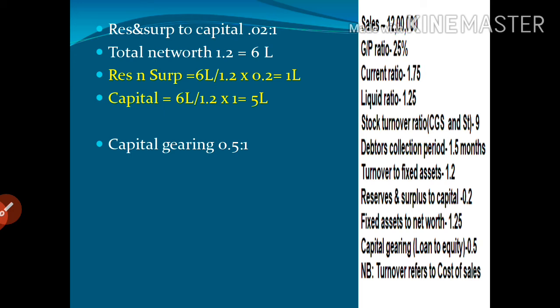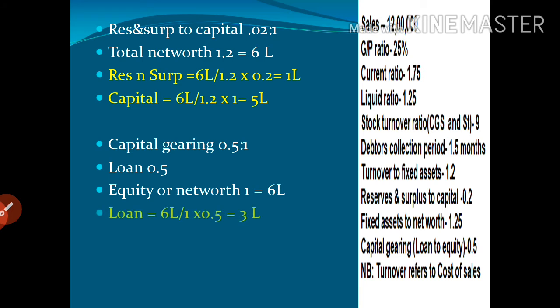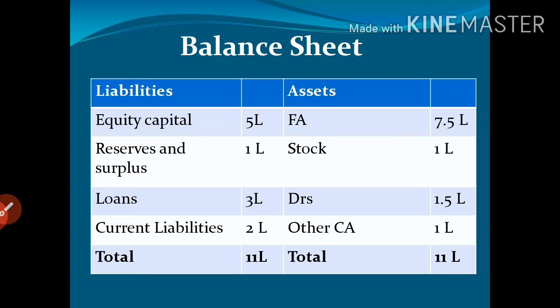Capital gearing ratio is 0.5, meaning loan to equity is 0.5 to 1. Equity here means net worth — share capital plus reserves and surplus — which is 6 lakhs. So loan equals 6 lakhs divided by 1 multiplied by 0.5, giving 3 lakhs. The final balance sheet shows: share capital 5 lakhs, reserves and surplus 1 lakh, loan 3 lakhs, current liabilities 2 lakhs on the liabilities side; fixed assets 7.5 lakhs, stock 1 lakh, debtors 1.5 lakhs, other current assets 1 lakh — totalling 11 lakhs.